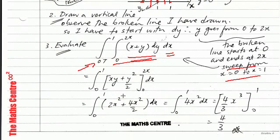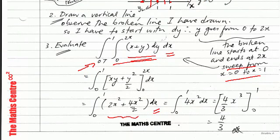When you plug in your limits and clean up, you get 2x squared plus 4x squared over 2, which simplifies to 4x squared. Now you integrate with respect to x — this is single variable integration. Integrating 4x squared gives 4 over 3 x cubed. Plugging in the values 1 and 0, you get 4 over 3, and we are done.